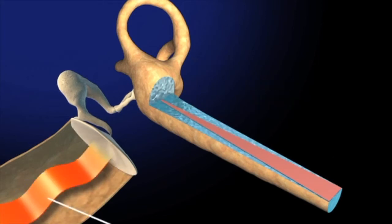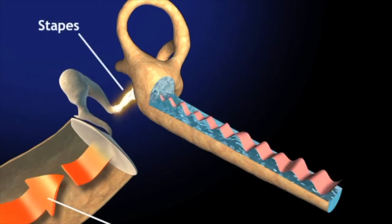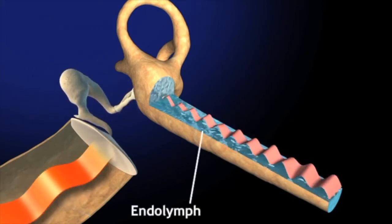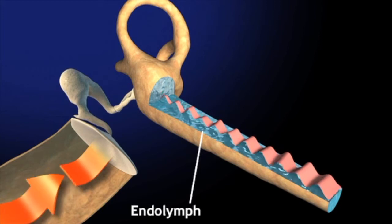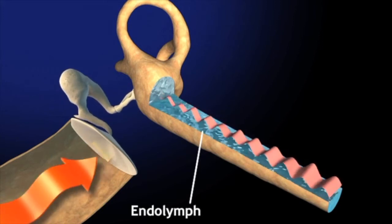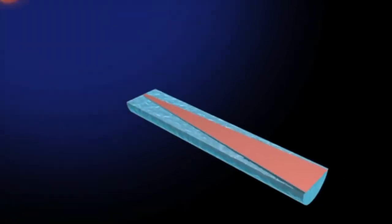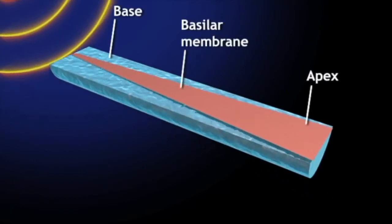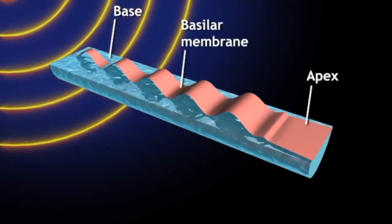When a sound wave pushes the footplate of the stapes at the oval window, endolymph is displaced within the scala media, the chamber containing the basilar membrane. Movement of the endolymph makes the basilar membrane bend near its base, starting a wave that propagates toward the apex.